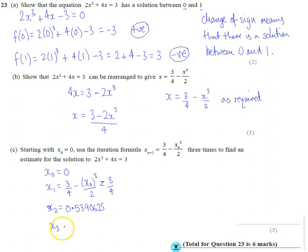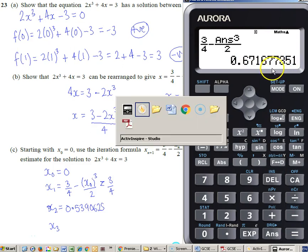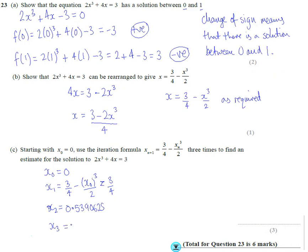To get the next answer, this is the third time we're going to go through it. Let's get the calculator back up again, and all we've got to do is push equals. This number now goes into the answer, which is what we want, that's the iteration. Push equals again and we get that decimal. So this is an estimate for x₃.